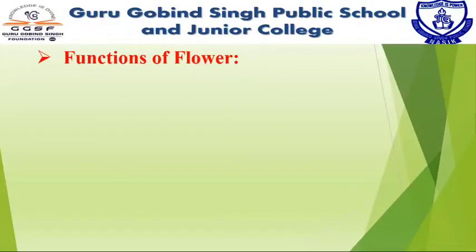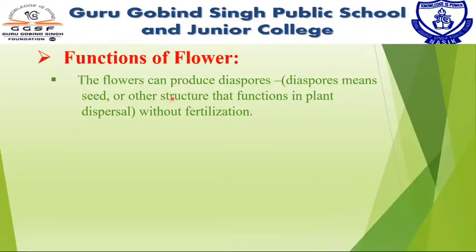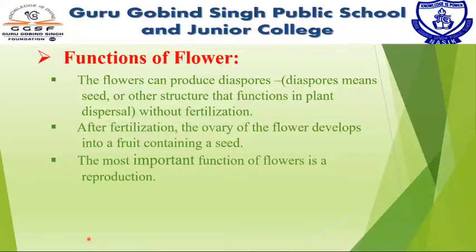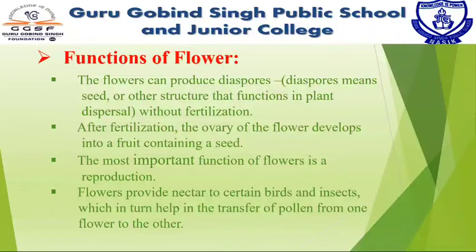Now let's get acquainted with the functions of a flower. First, flowers can produce diaspores — meaning seeds or other structures that function in plant dispersal without fertilization. The next function is that after fertilization, the ovary of the flower develops into a fruit containing a seed. The most important function of a flower is reproduction. Lastly, flowers provide nectar to certain birds and insects, which in turn help in the transfer of pollen from one flower to another.